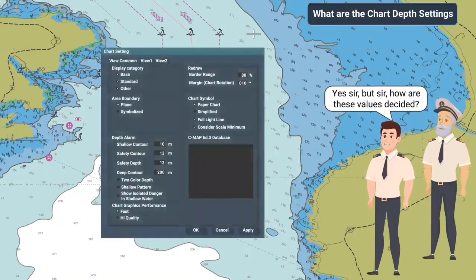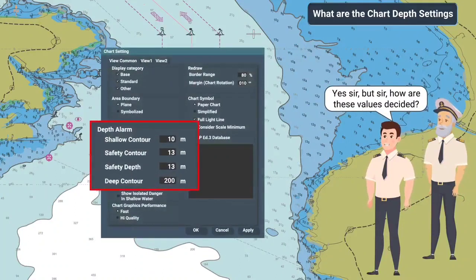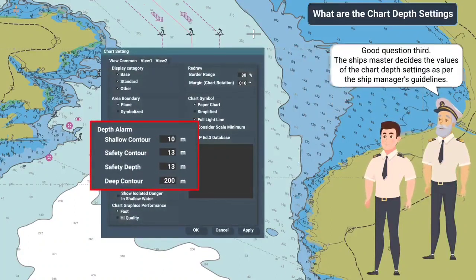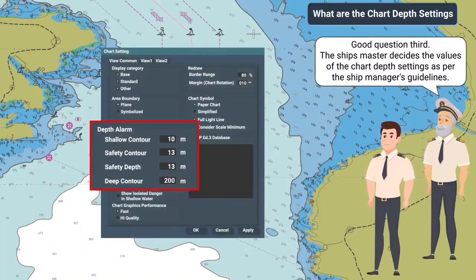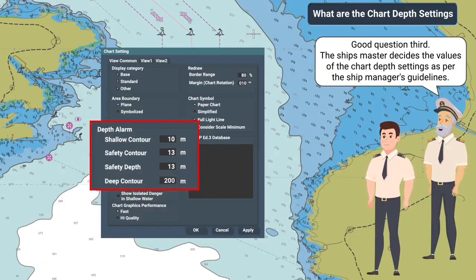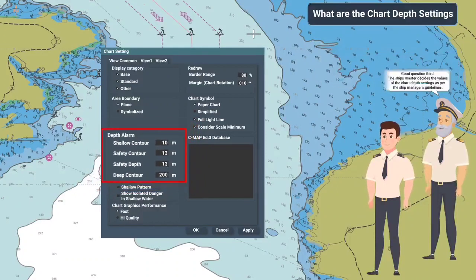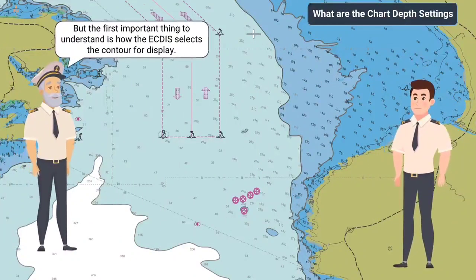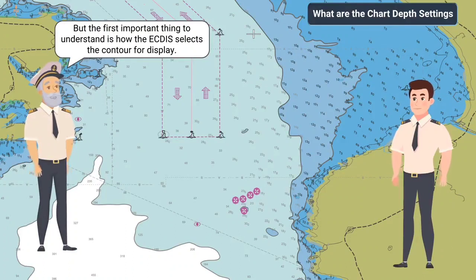Yes, sir. But sir, how are these values decided? Good question, Third. The ship's master decides the values of the chart depth settings as per the ship manager's guidelines. But the first important thing to understand is how the ECDIS selects the contour for display.